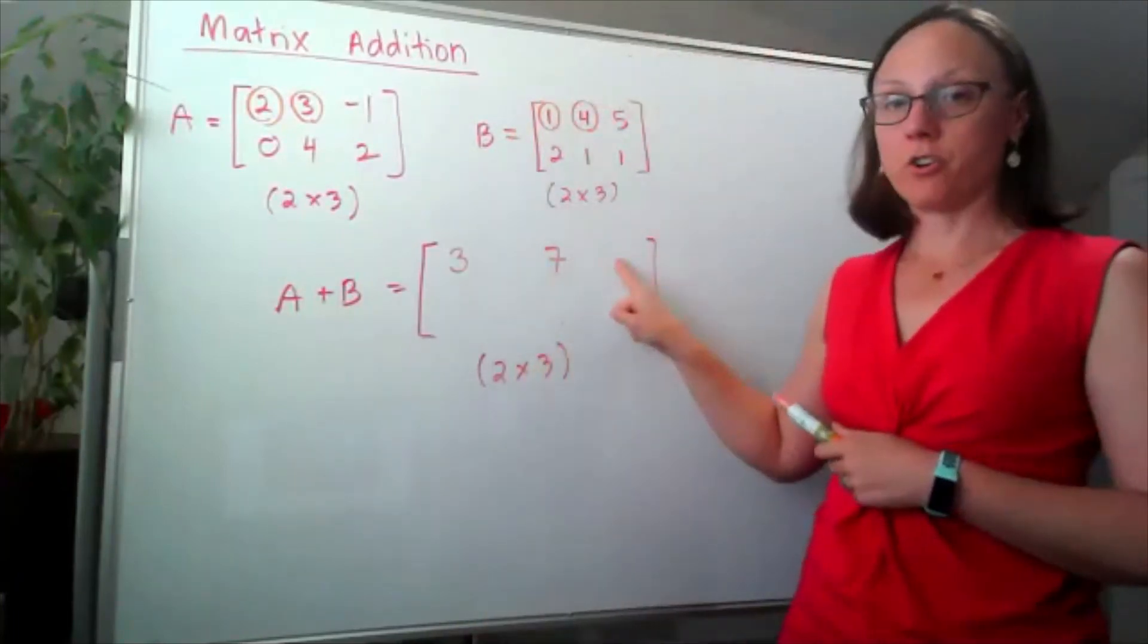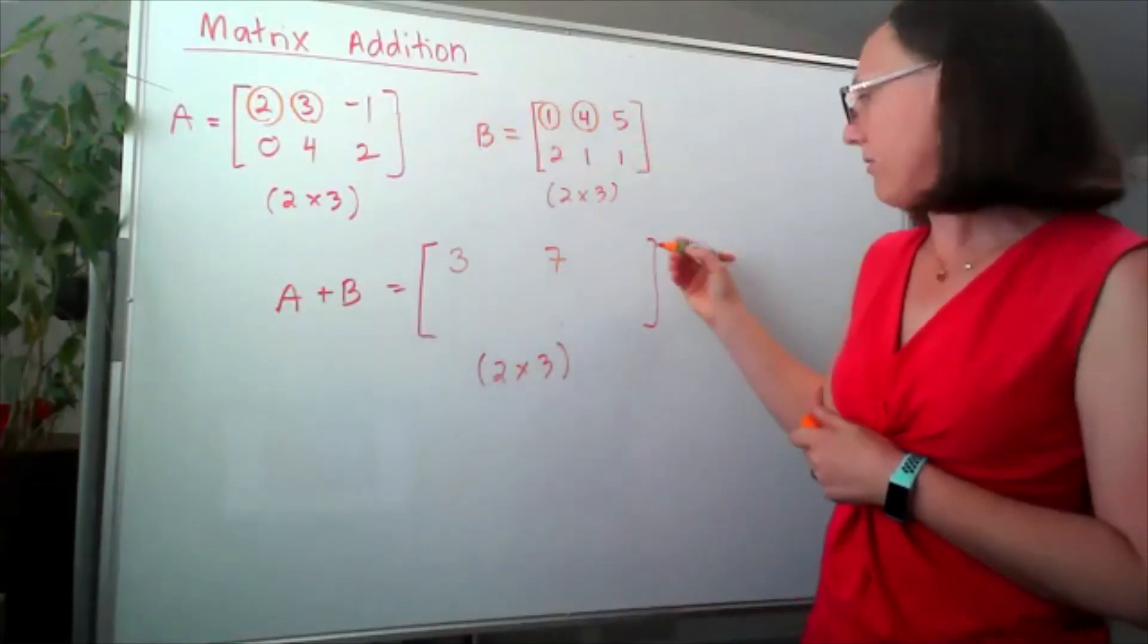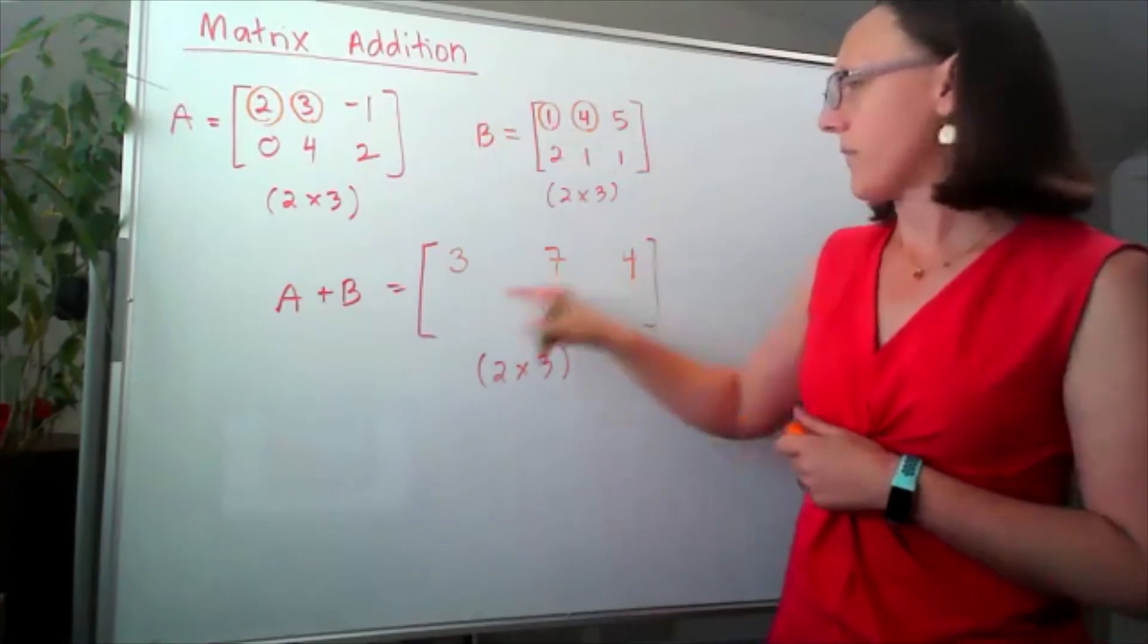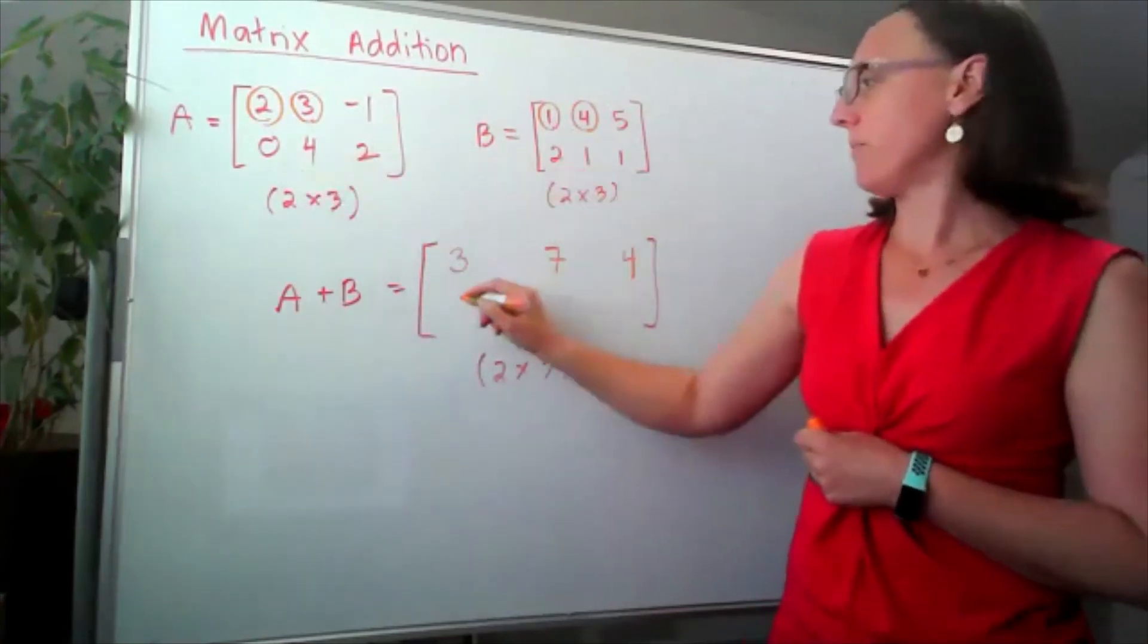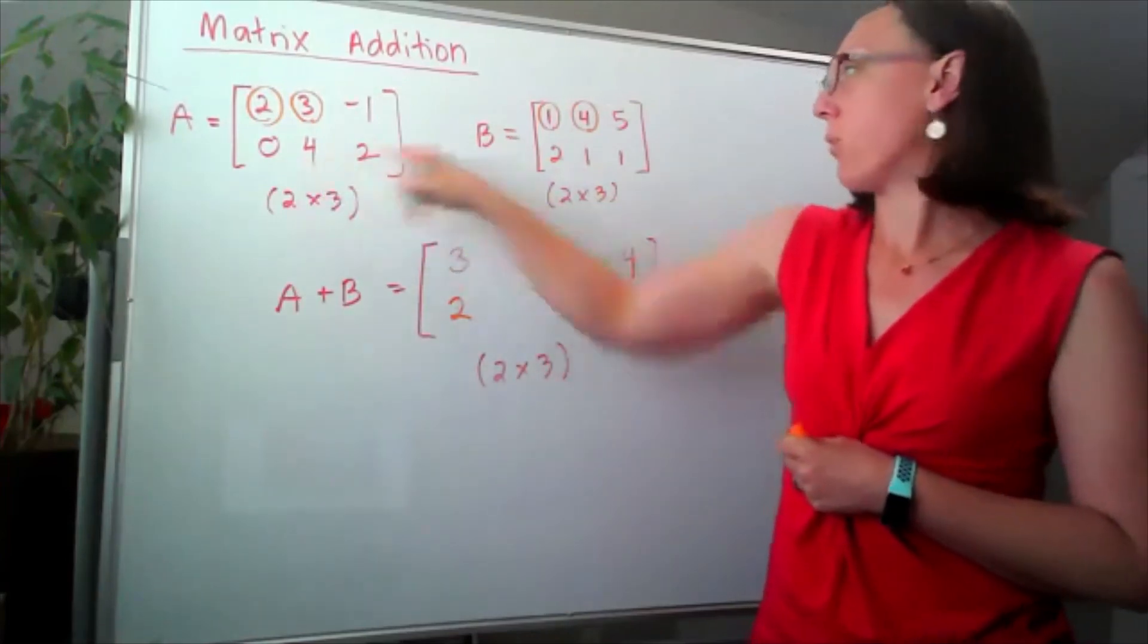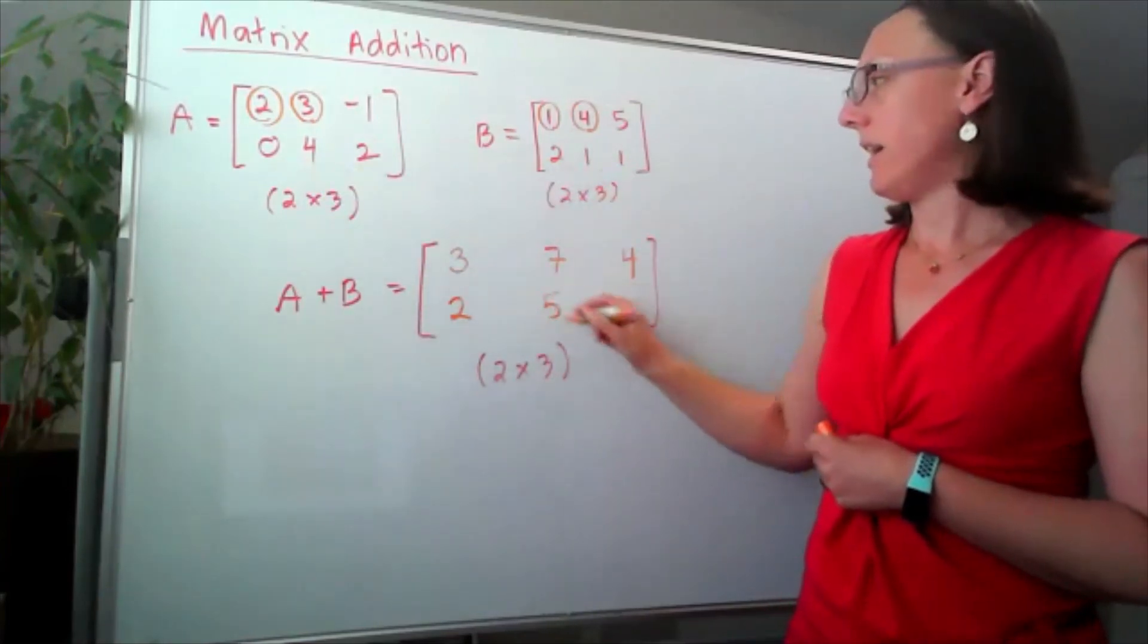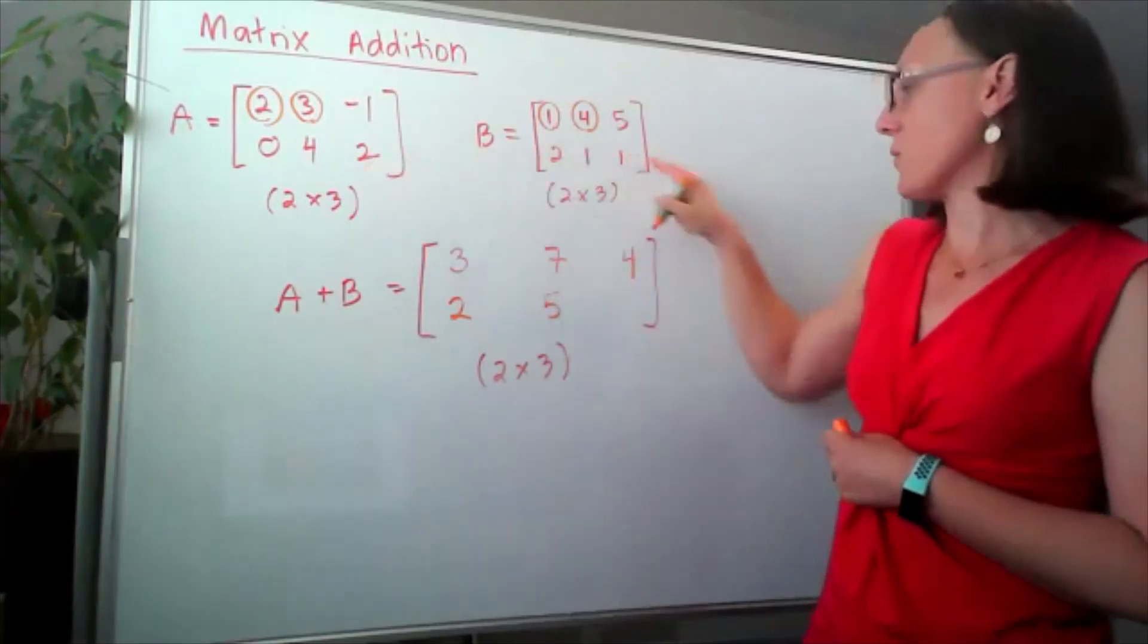So, first row, third column, negative one plus five, second row, first column, zero plus two, second row, second column, four plus one, and finally, second row, third column, two plus one, and I get three.